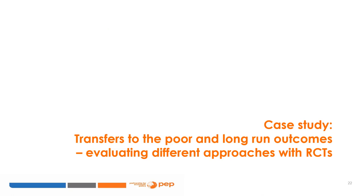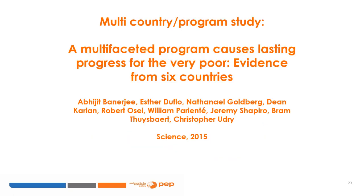Besides conditional cash transfer programs, there are other types of transfer programs for the poor that can be evaluated with randomized control trials. We turn to a multi-country, multi-program study called 'A Multifaceted Program Causes Lasting Progress for the Very Poor: Evidence from Six Countries,' by Abhijit Banerjee, Esther Duflo, and other co-authors, published in Science in 2015.